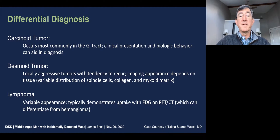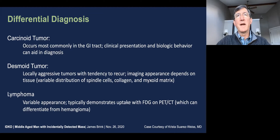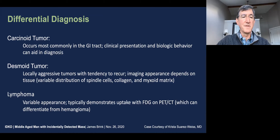Desmoid tumors are locally aggressive tumors with a tendency to recur. Imaging appearance depends very much on the tissue that predominates, including spindle cells, collagen, and myxoid matrix. In this respect, the rather atypical T2 appearance of not being quite as bright as some other hemangiomas probably reflects differing degrees to which non-vascular spaces compose the tumor, such as collagen and other fibrous tissues.